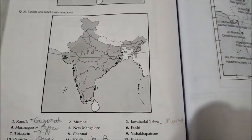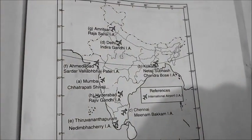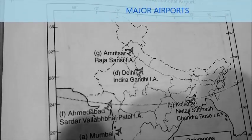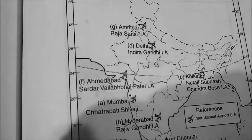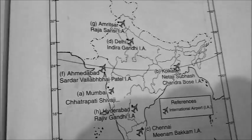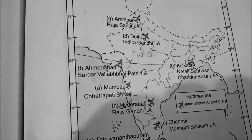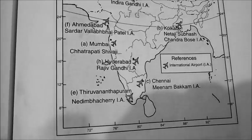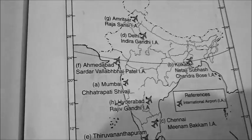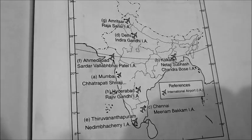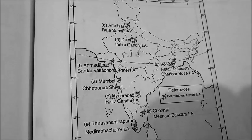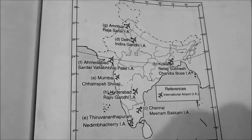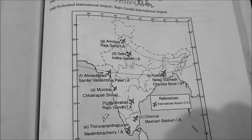Finally, the major international airports. Rajasansi International Airport in Amritsar. Indira Gandhi International Airport in Delhi. Sardar Vallabhbhai Patel Airport in Ahmedabad. Netaji Subhash Chandra Bose Airport in Kolkata. Chhatrapati Shivaji Airport in Mumbai. Rajiv Gandhi International Airport in Hyderabad. Meenambakkam International Airport in Chennai. And Thiruvananthapuram International Airport. If you go by the names, you'll understand which city each belongs to.